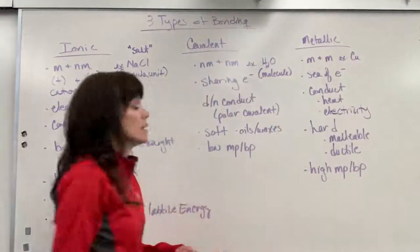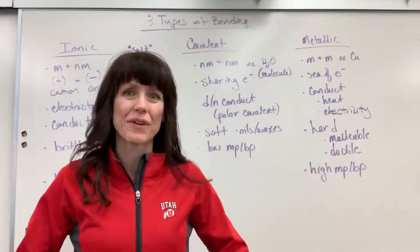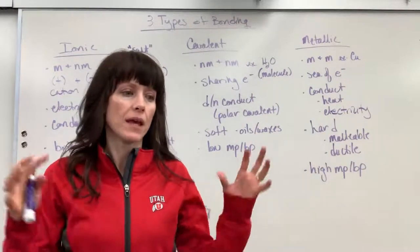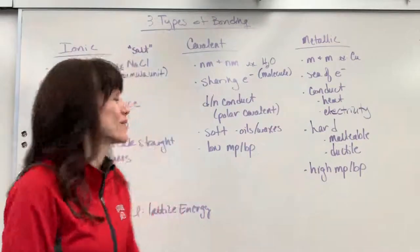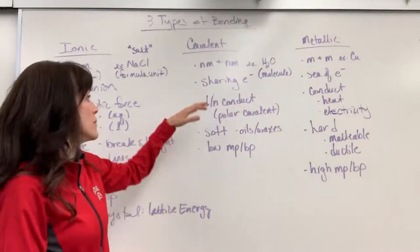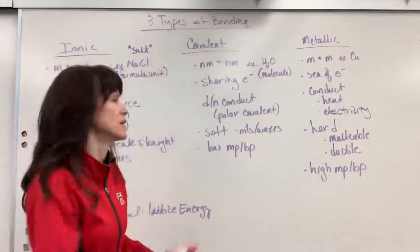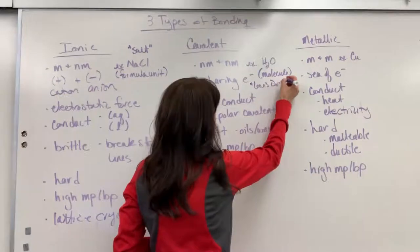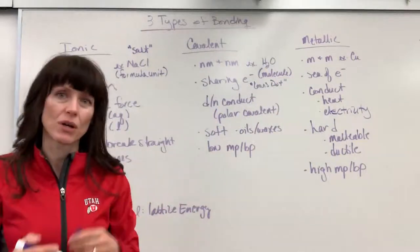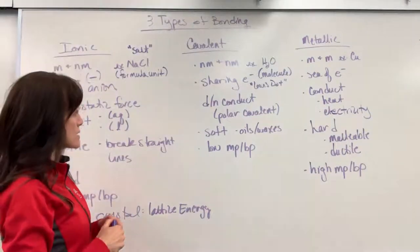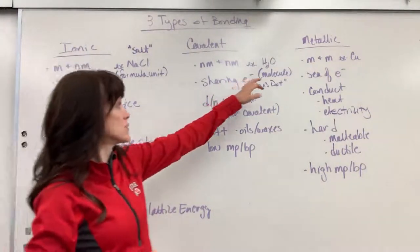Okay, covalent compounds. These are huge for us because so much of biological systems, they're composed of covalent compounds. Now, a covalent compound is between a non-metal and a non-metal, and this is where we have sharing of electrons. You'll want to watch the Lewis dot structure. Lewis dot, that's how we show a sharing of electrons, and that's the bond that holds the electrons together.